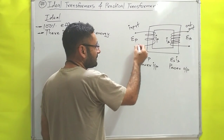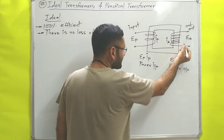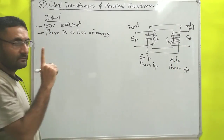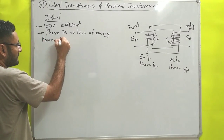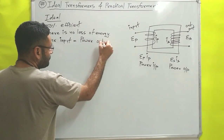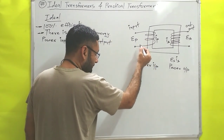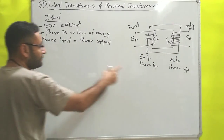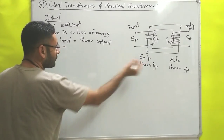No loss of energy means no loss of power. No loss of power means that whatever power you are supplying to the primary side, the same power is transmitted to the secondary side at the output. So for the case of an ideal transformer we can write that power input equals power output. For example, if you supply 100 kilowatts to the primary side, the same 100 kilowatts you will get at the secondary side. Power at input is Ep into Ip, which equals power at output, Es into Is.